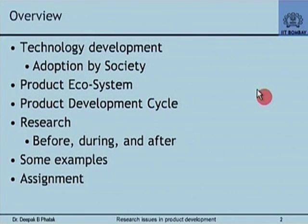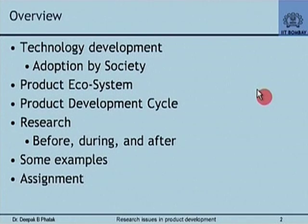There is a heading in my overview that says 'before, during, and after' — and that is the point I wish to make. We are all familiar with research leading to something, but we often do not think about research required during the evolution of the product and after a product has been adopted by society. Research for a product is essentially a continuous process: it starts in the past, continues in the future, and happens as we use the product. I will illustrate these points through examples and we will end with an assignment.